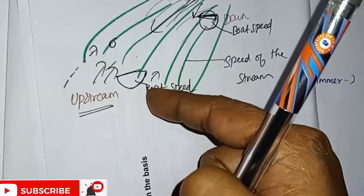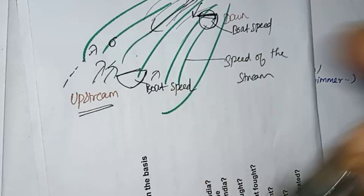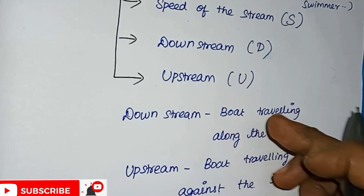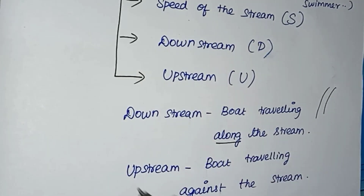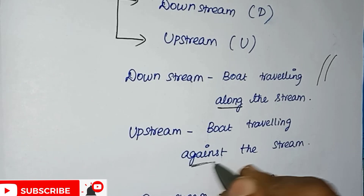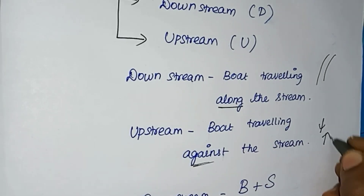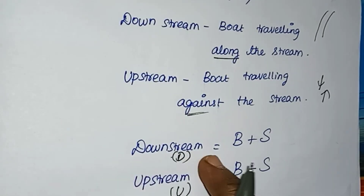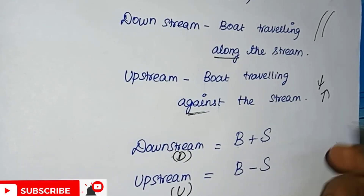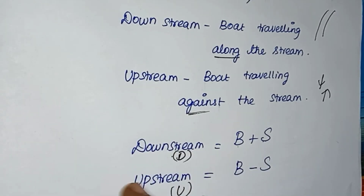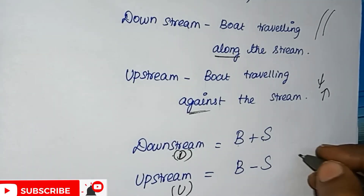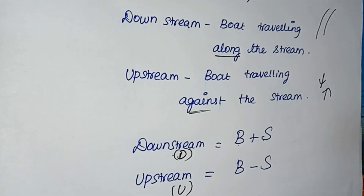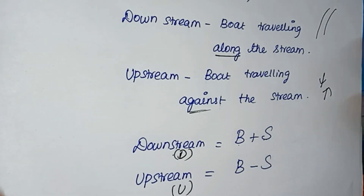Here is the speed of the boat. What is the formula? Downstream is the boat traveling along the stream — going in the same direction. Upstream is traveling against the stream — going in the opposite direction. The speed going along the same direction is straightforward to calculate.